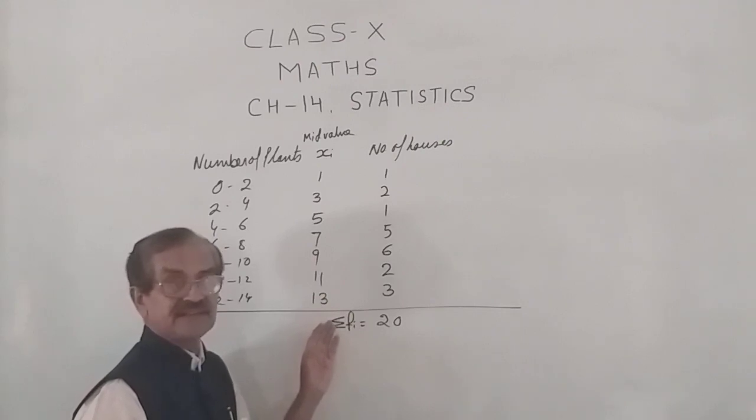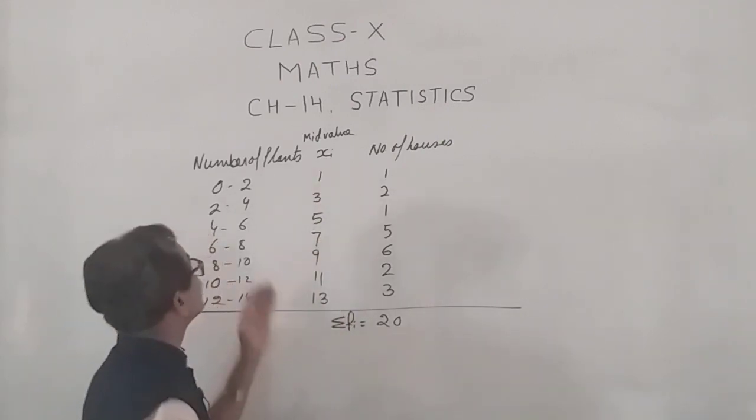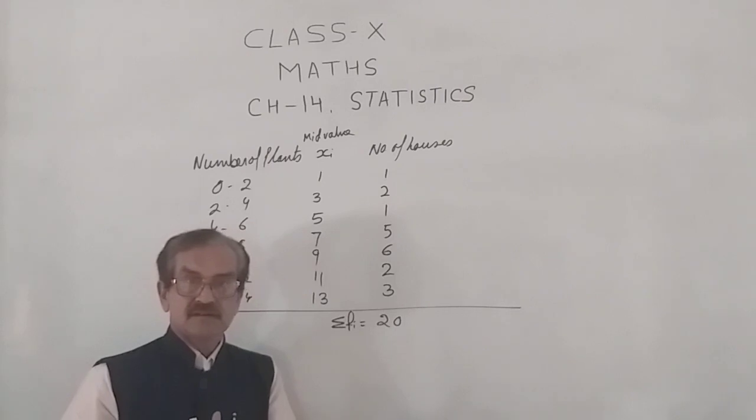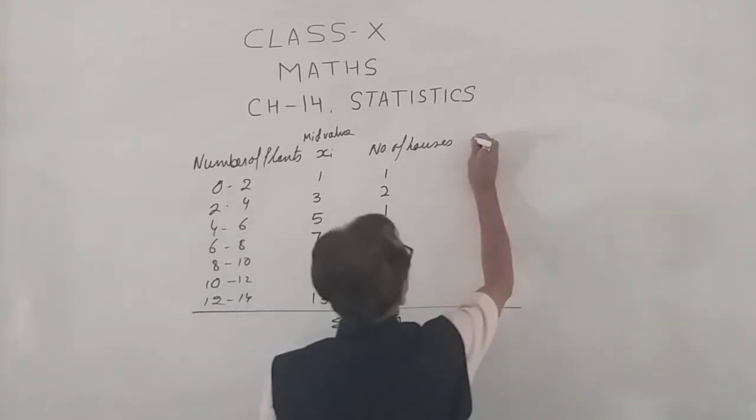Now, since the values of xi and fi are very small, the calculations are very simple, so we will be going for the direct method.